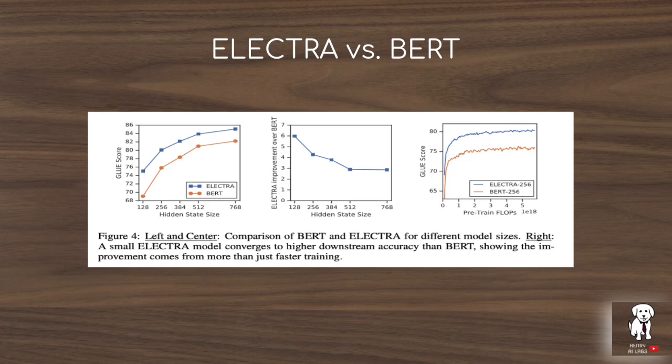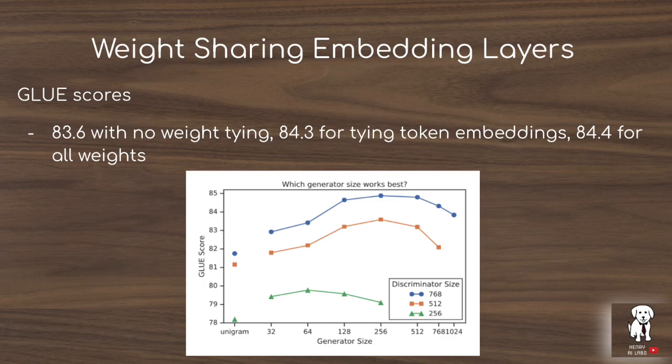The ELECTRA pre-training objective is more efficient and leads to better performance than the masked language modeling objective introduced in BERT. In a similar fashion to the GAN framework, ELECTRA's replace token detection task pre-trains the transformer model as a large discriminator, predicting which tokens have been replaced by a lower capacity generator.